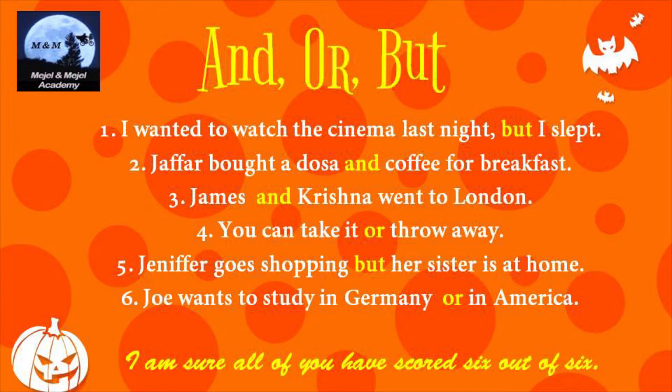'Joe wants to study in Germany or in America.' This is an alternative or choice relationship — therefore the conjunction used is 'or'.